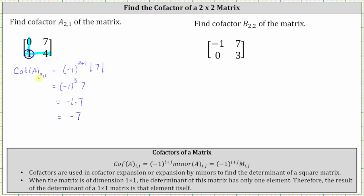For the second example, we're asked to find the cofactor of b sub two comma two. We assume the given matrix is matrix B. So we begin by identifying the element in row two column two, which is the three. To find the minor, we will have to eliminate row two and column two. Notice once again, this leaves us with a one by one matrix with an element of negative one.